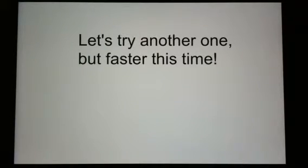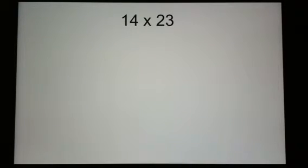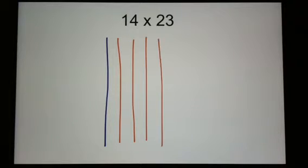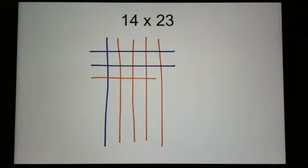Let's try another one, but faster this time, and all on one page so you can see it all happening together: 14 times 23. 14 has 1 ten and 4 ones. 23 has 2 tens and 3 ones. Alright, I'm going to start by counting up my ones.